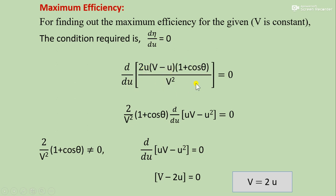Setting d/du of [u·(V minus u)] equal to zero — since 2/V squared and (1 plus cos theta) are constants — differentiating u·(V minus u) equals uV minus u squared with respect to u gives V minus 2u equals zero, meaning V equals 2u.